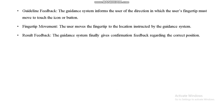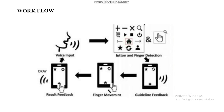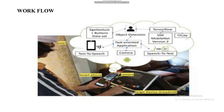Guidance feedback monitors fingertip movement to the location instructed by the guidance system. Result feedback gives the confirmation regarding the correct position of the visually impaired person's fingertip to the smart device button or icon. In the workflow, voice input activates the system, button and fingertip detection captures bounding boxes, guidance feedback is played, and depending on finger movement the user can touch the exact button, which replies with a confirmation message.